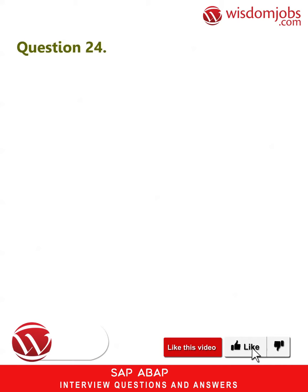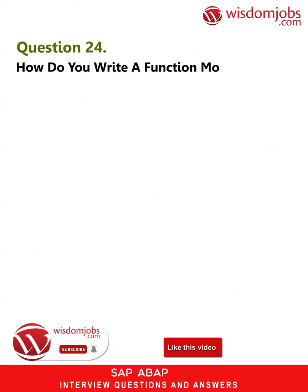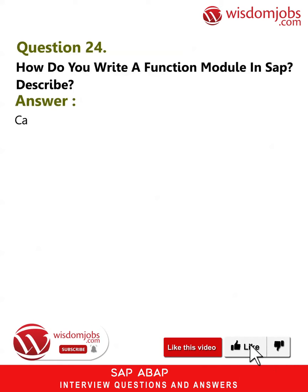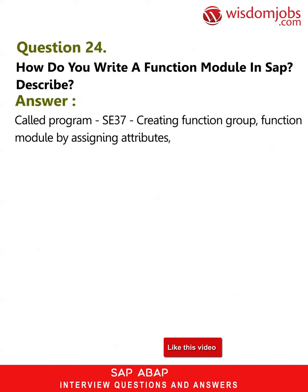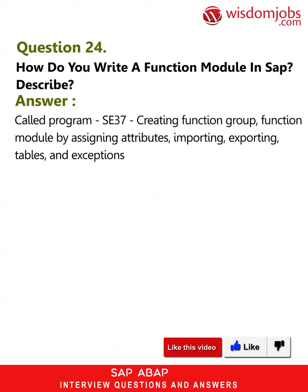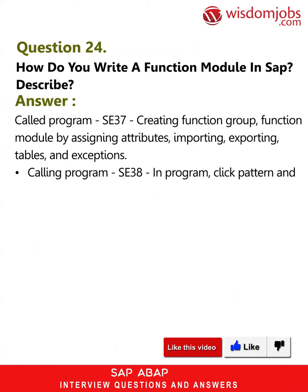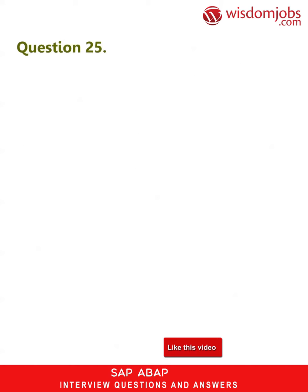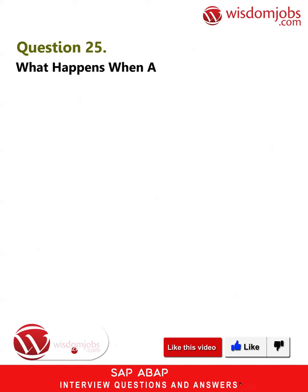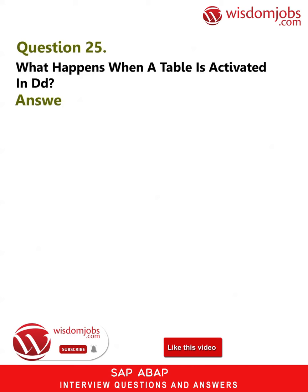Question 24: How do you write a function module in SAP? Called program SE37: create a function group and function module by assigning attributes, importing, exporting, tables, and exceptions. Calling program SE38: in the program, click pattern and write the function name, then provide export, import, tables, and exception values.